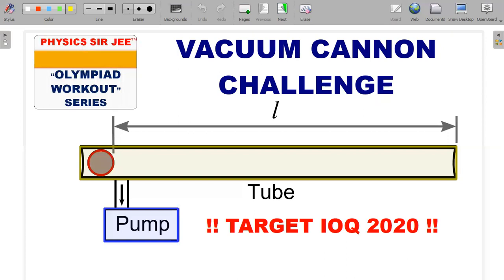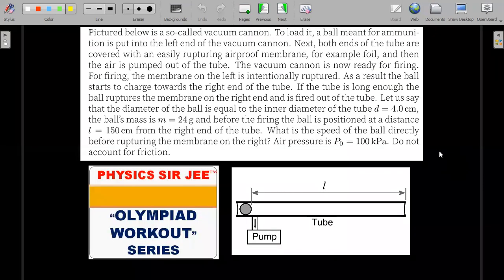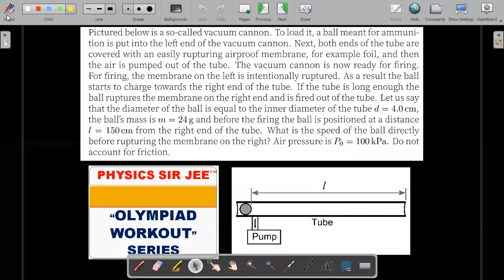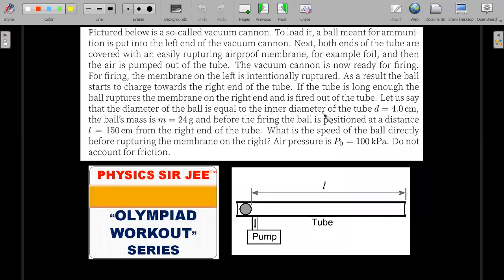So this problem, as you could see, the heading is a vacuum cannon challenge has been picked up from an old Estonian Olympiad problem. This gives you a flavor of how the language in the Olympiad can affect the performance of a student. So let's try to go through it. In case you want to give it a fair try with an unbiased mind, try to pause the video here. Read the text on your own, look at the diagram at the bottom, try solving it for five to ten minutes and then come back for the explanation of the solution.